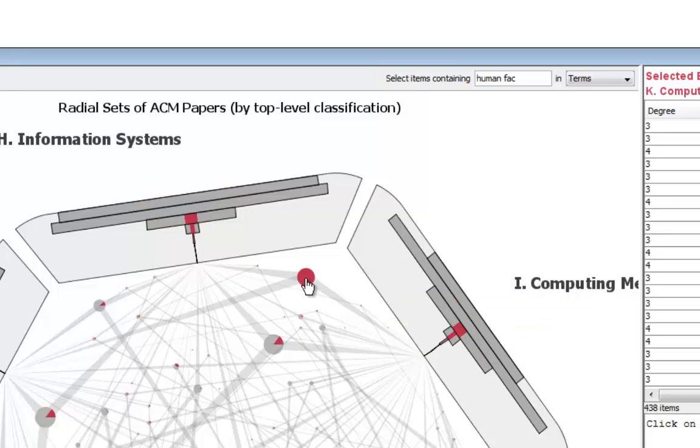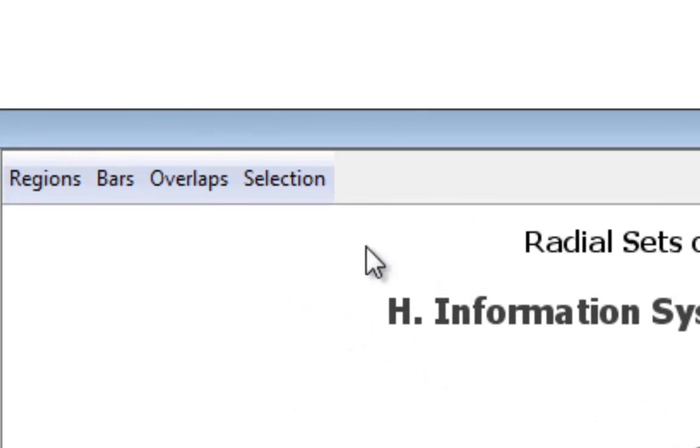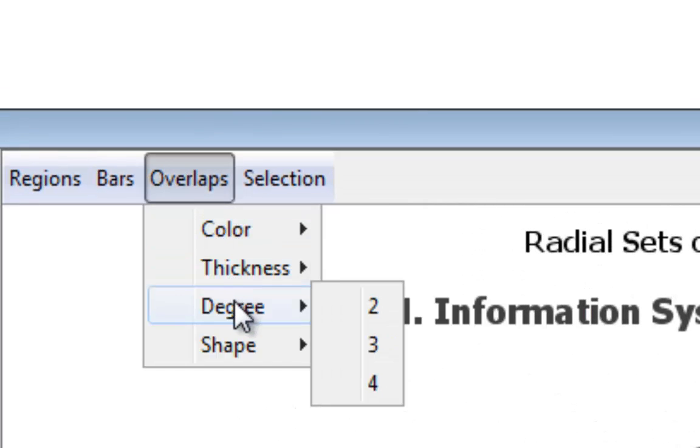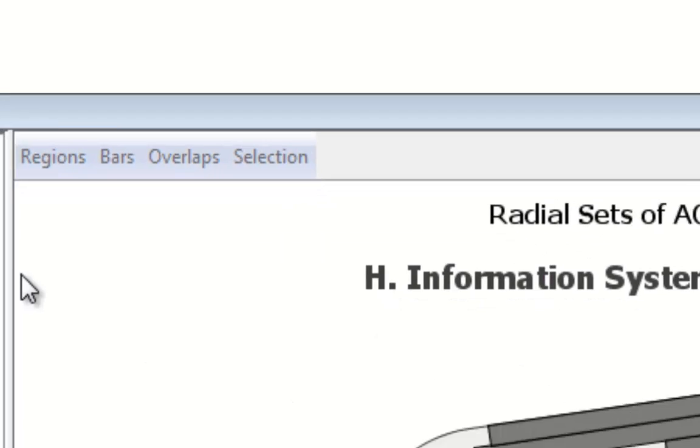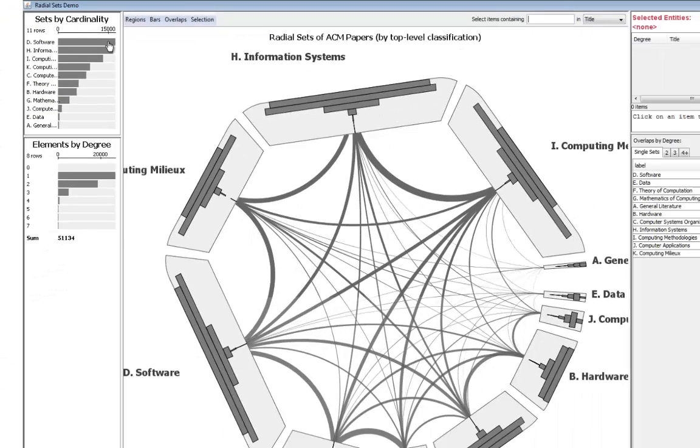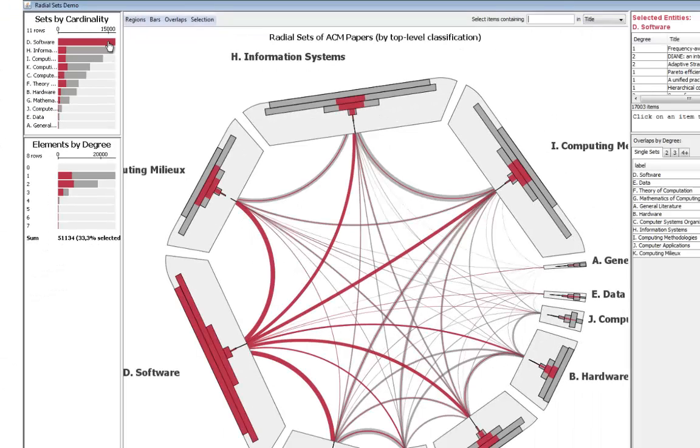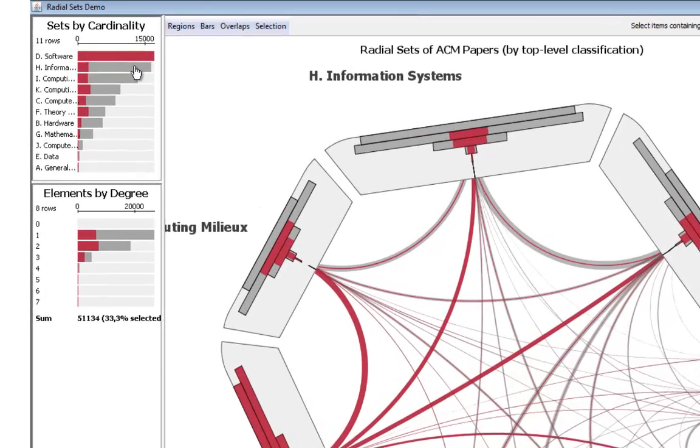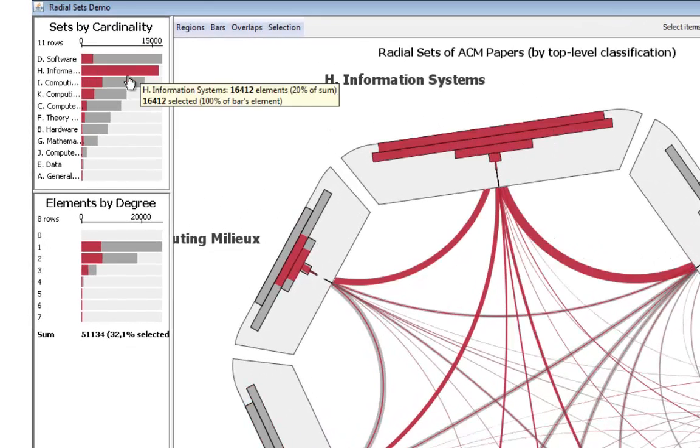Clicking on an overlap selects the elements in it. Likewise, all subsets of elements in the interface can be selected and combined using interaction. Clicking on a set in the sets bar chart selects its elements and highlights its overlaps with the other sets.